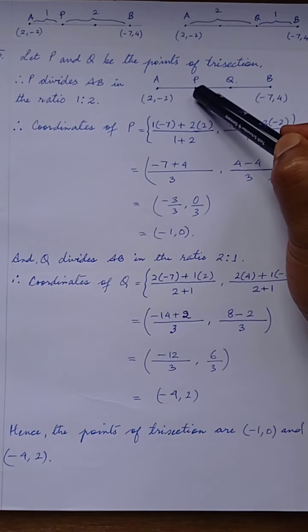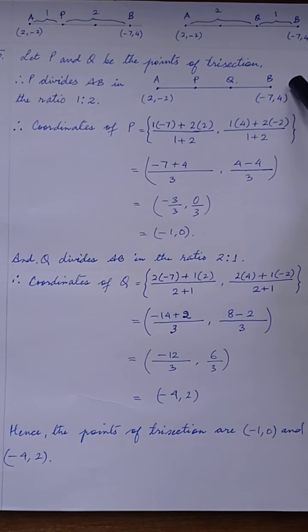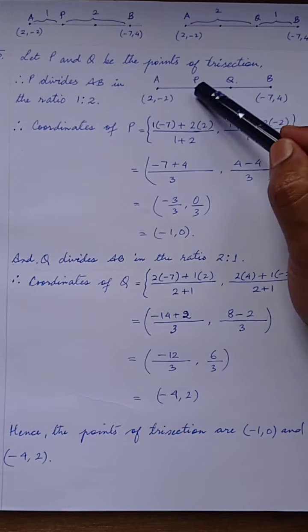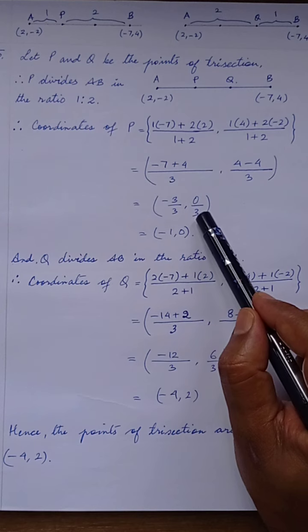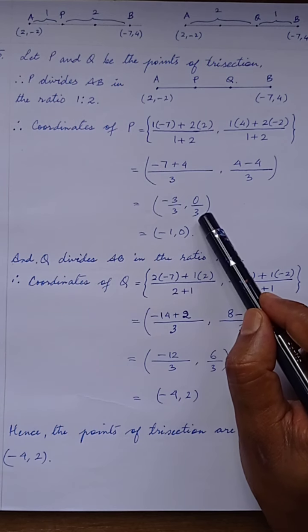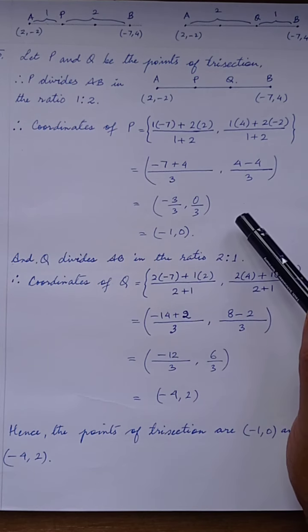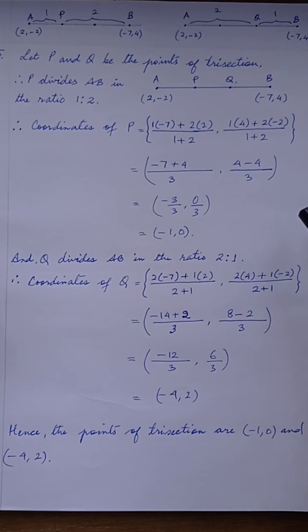The points of trisection are (−1, 0) and (−4, 2). If you have five or six parts, the method is the same — just count the parts on each side. Using this concept, solve question number 12, where AP/AB = 3/7, so you divide the line into 7 parts. The hint is hidden in question number 3. The assignment is Exercise 11.2, question number 12. Thank you all.